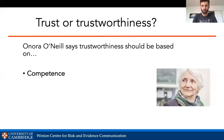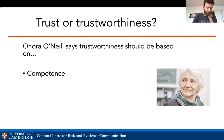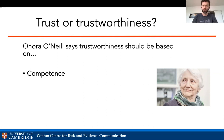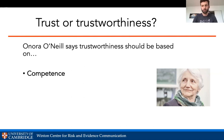O'Neill says trustworthiness should be based on competence. A lot of organizations say their goal is that people trust them more, and then people will change their behavior or beliefs. But O'Neill says we shouldn't aim for people to trust us more — we should instead think about how to communicate in the most trustworthy way: representing information in the most balanced, fair, competent, and accessible way. If you focus on trustworthiness, trust as a product will follow.